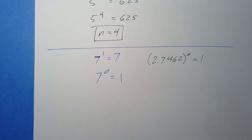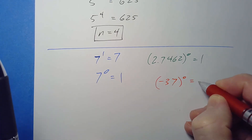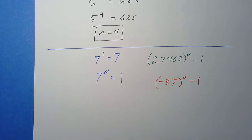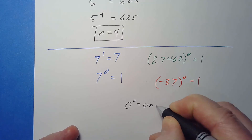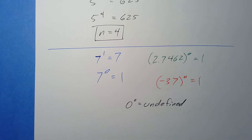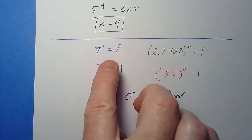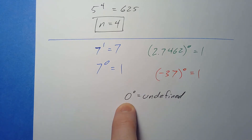The zero exponent rule works for negative numbers too — negative 37 to the zero power also equals one. The only case that doesn't work is zero to the zero power, which is considered undefined. If you put that in your calculator it won't be happy. For all integers, positive or negative, and even decimals and fractions, the only integer that doesn't work is zero to the zero.